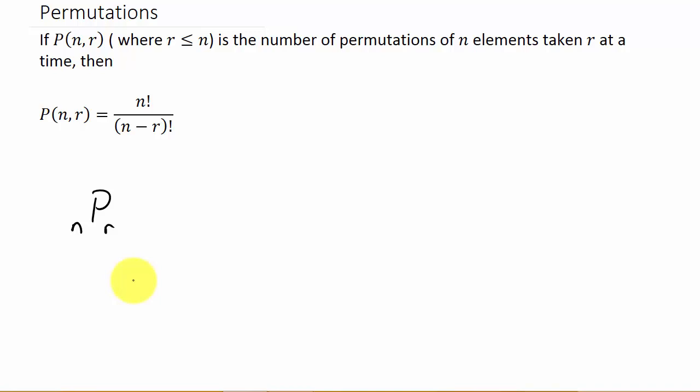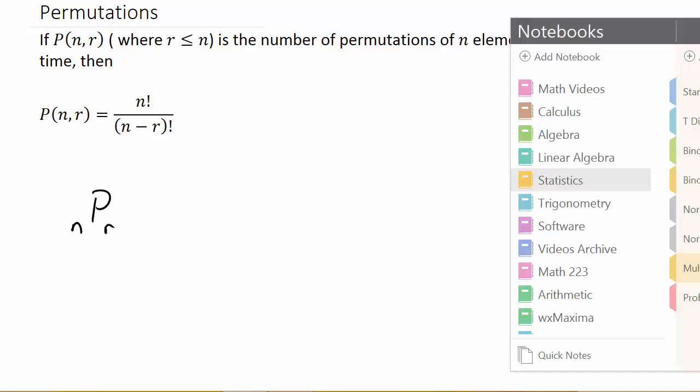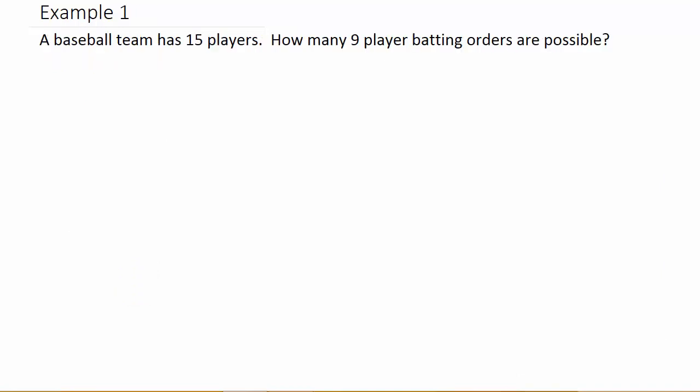Here we have a baseball team has 15 players. How many nine player batting orders are possible? So first we need to think about it. We've got 15 players and we're choosing nine of them for a batting order. Does the order matter?